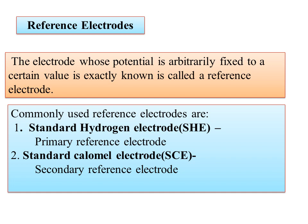Reference electrodes are electrodes in which their potential is arbitrarily fixed to a certain value or is exactly known, used to fix and measure the potential of other electrodes. If the potential is zero, it can be used as a standard electrode or half cell.